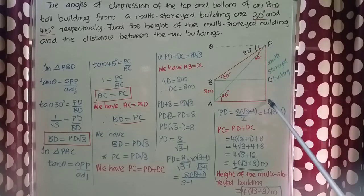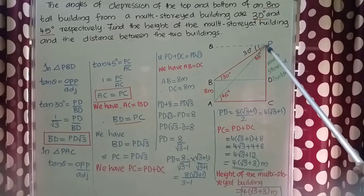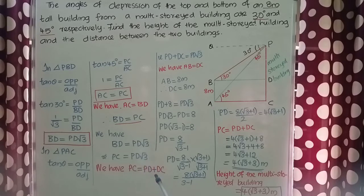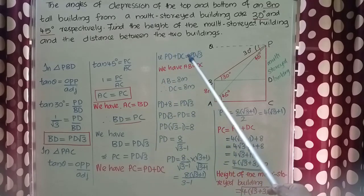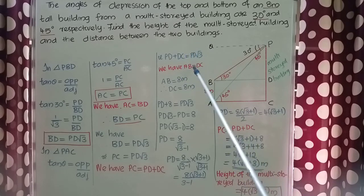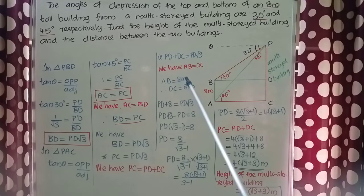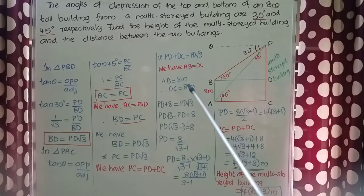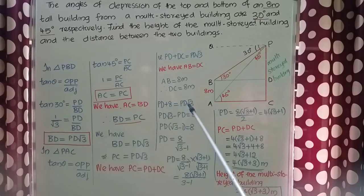Looking at the figure, PC is the total length and PC = PD + CD. Also, AB = 8 meters, so CD also equals 8 meters. Substituting DC = 8 into PC = PD√3, and replacing PC with PD + DC, we get PD + 8 = PD√3. Taking PD to the other side: PD√3 − PD = 8, and factoring out PD: PD(√3 − 1) = 8.